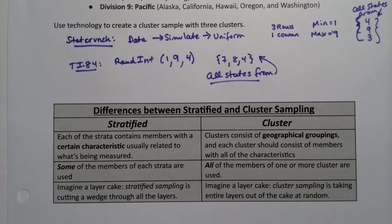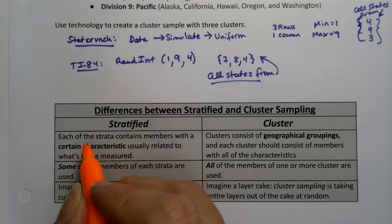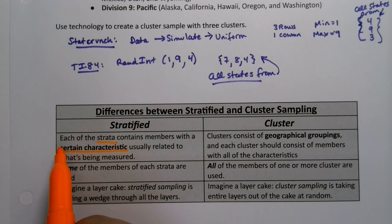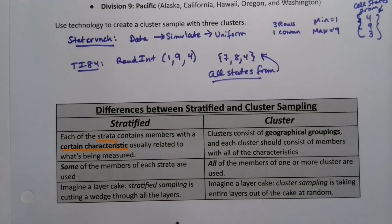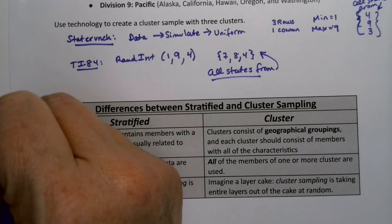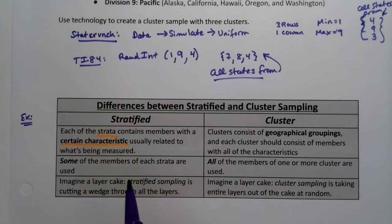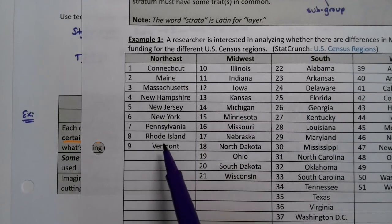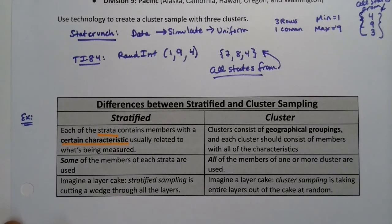Now, it might seem like stratified and cluster are similar, and they are in a certain respect because they both use non-overlapping groups. But the reasons for creating those groups and how those groups work are different. With stratified sampling, the strata contain members with a certain characteristic — so everybody in strata one is the same, everybody in strata two is the same. Examples would be freshmen, sophomores, juniors, and seniors, or age groups like 15 to 25, 25 to 35, 35 to 45.